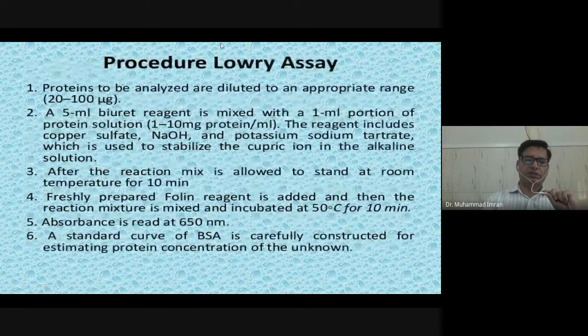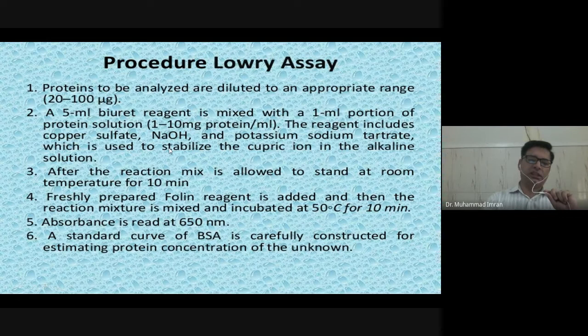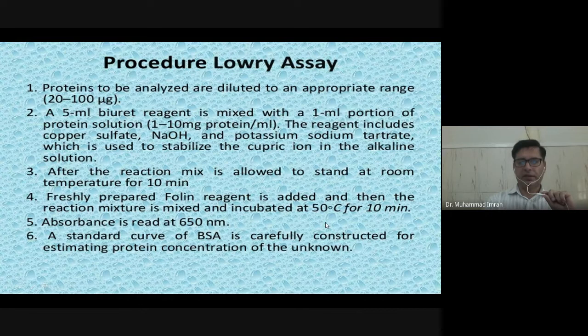For the Lowry procedure, proteins are diluted to an appropriate range of around 20 to 100 micrograms — in Biuret you use milligrams, but in Lowry assay you use micrograms. The procedure is similar: 5 ml Biuret reagent and 1 ml protein, then incubate for 10 minutes. Then add the Folin-Ciocalteu reagent and incubate again for 10 minutes. Then take the absorption reading at 650 nanometers. Draw the standard curve to compare your results.